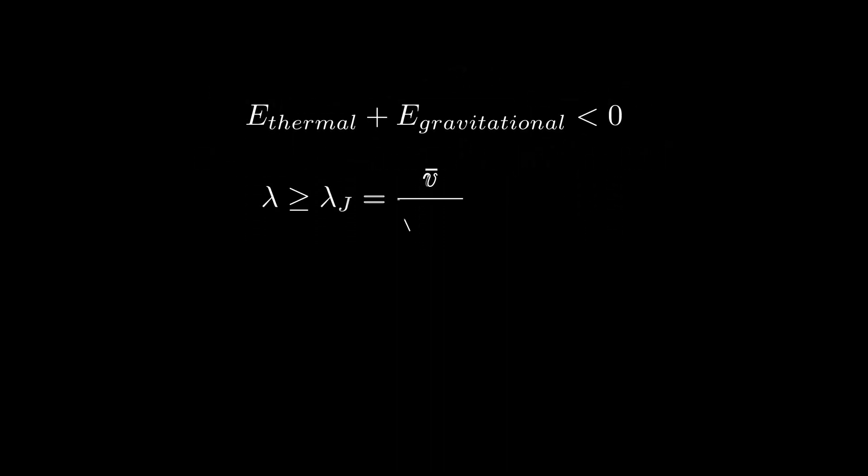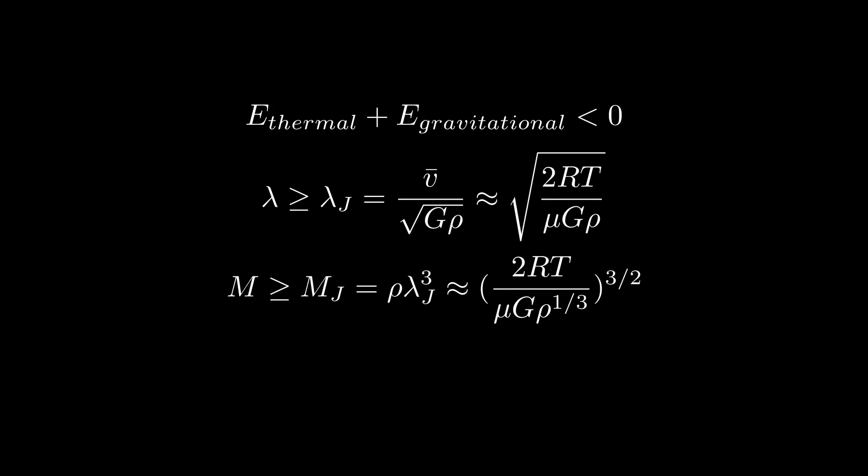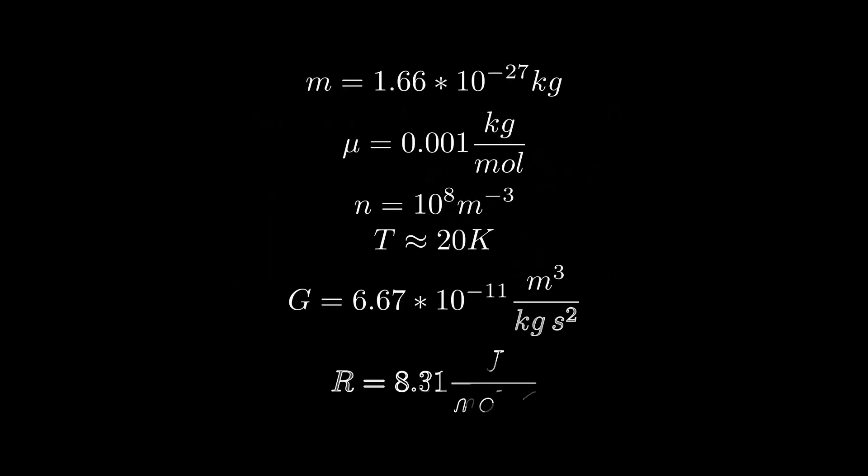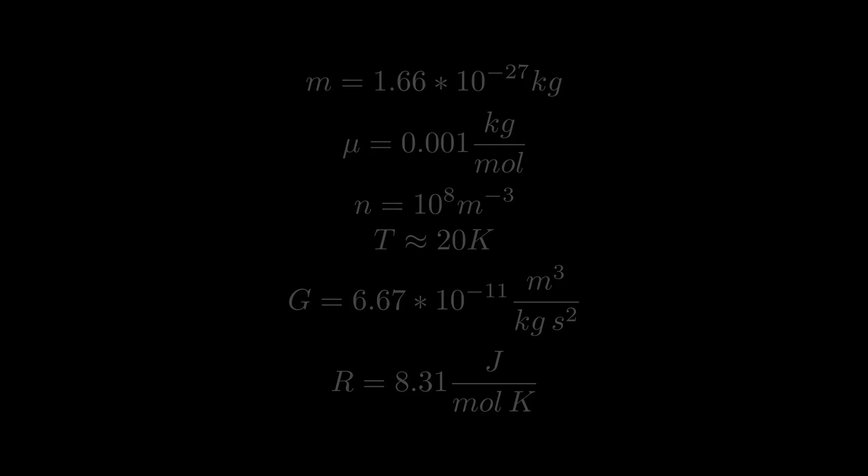And after some simple mathematical transformations, we can get the critical values for the size and mass of the cloud. If we calculate this taking into account several assumptions that you can see here, we get that the scale lambda should be about 2 multiplied by 10 in the power of 17 meters.